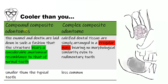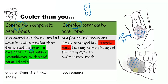Odontoma can be classified into compound and complex based on the manner that enamel and dentin are laid down. If they are laid down in such a fashion that the structure bears a resemblance to a normal tooth in some way, it is called compound — although smaller than normal teeth, they do resemble the morphological appearance of a tooth. This is why it is called the compound composite odontome. The complex, on the other hand, is just an irregular calcified mass with a certain radio-density that does not bear any similarity even to a rudimentary tooth.